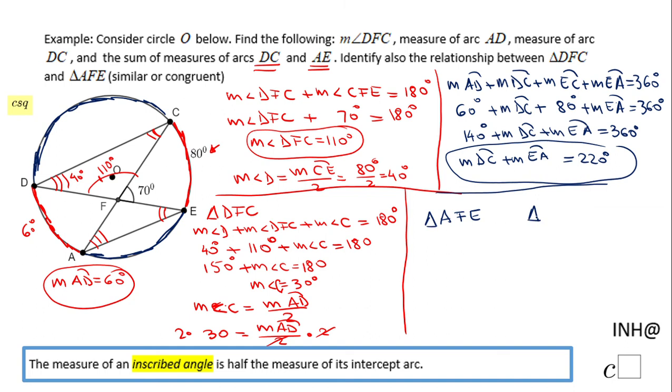You want to be sure you have the corresponding letters, so A goes to D, F goes to F, and E goes to C. So these two triangles are similar. Why?